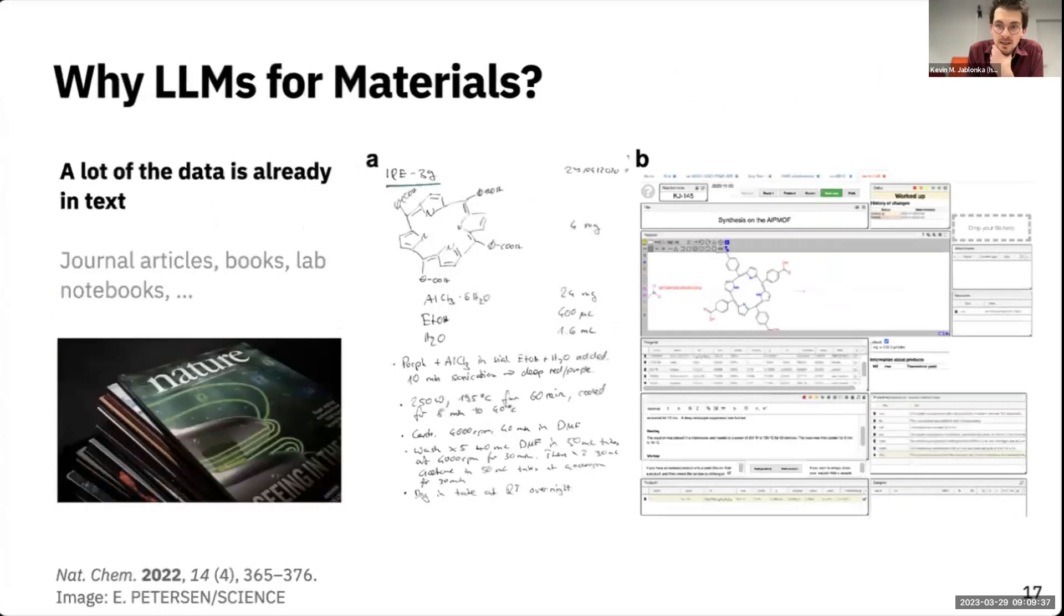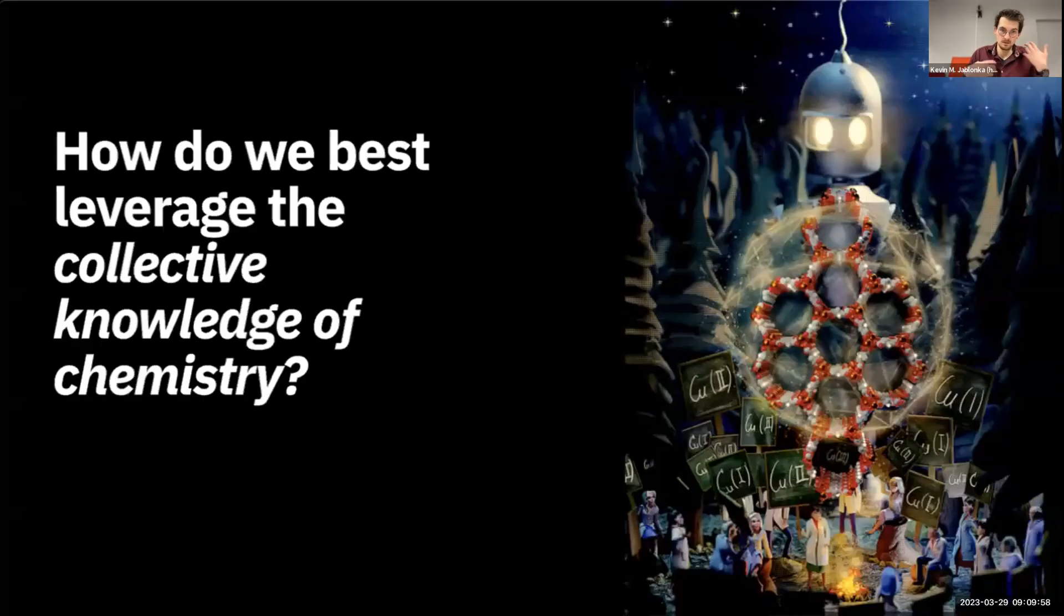Interestingly, most data in chemistry isn't in tables and we usually don't have a nice collection of structures and labels for those structures. Most data we have in chemistry and physics is in journals, books, or lab notebooks, and this isn't structured in a nice way. How can we leverage all this knowledge we have out there in books, journals, papers, lab notebooks to help us discover new compounds?